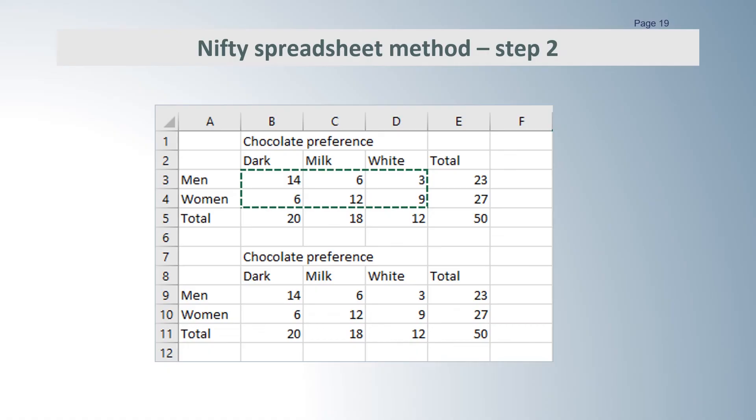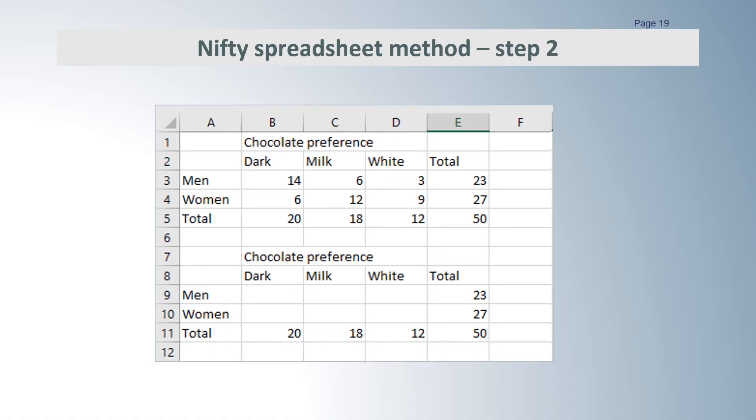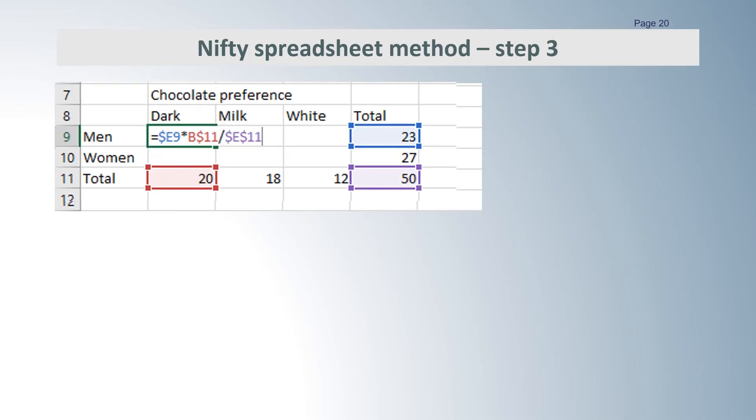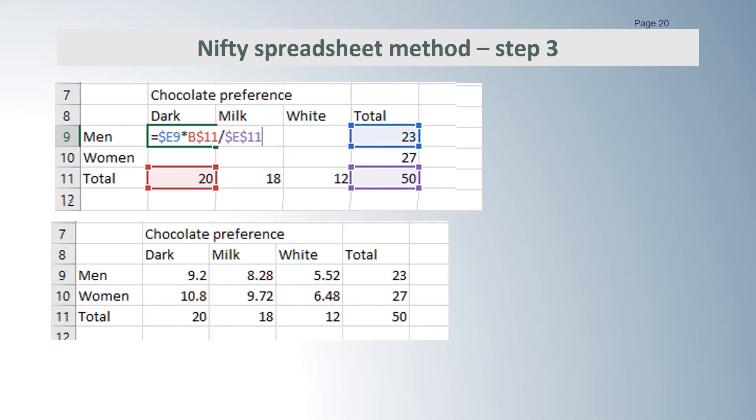Copy and paste the table as values and clean out the middle values. Now we want to fill up the middle of the table with the values we would get if gender and chocolate preference were independent. In the first cell we multiply the row total E9 by the column total B11 and divide by the grand total E11. You can do each of the cells by hand or you can put in absolute references with the dollar signs and copy across and down. This is the result and this shows the formulas.